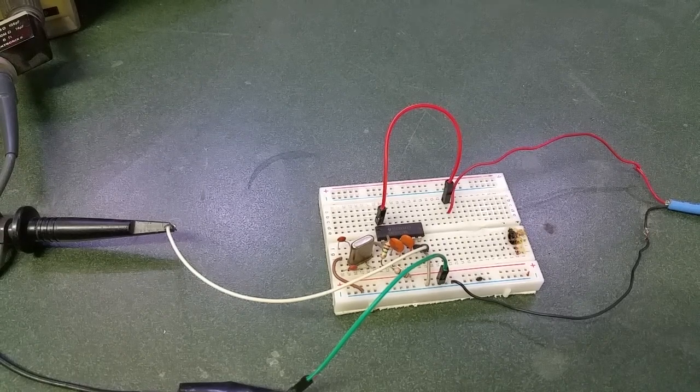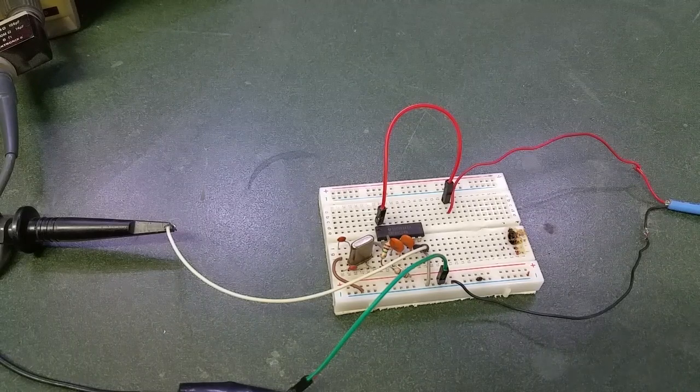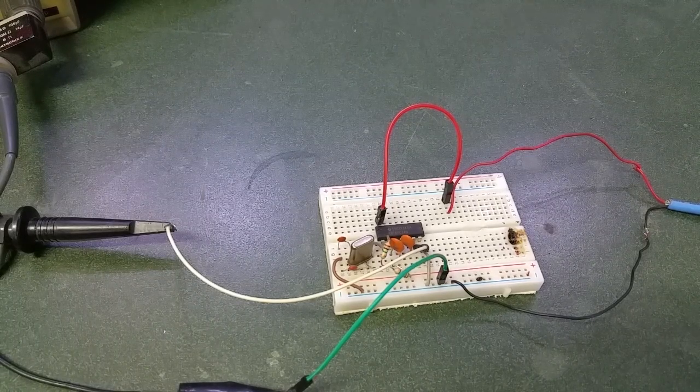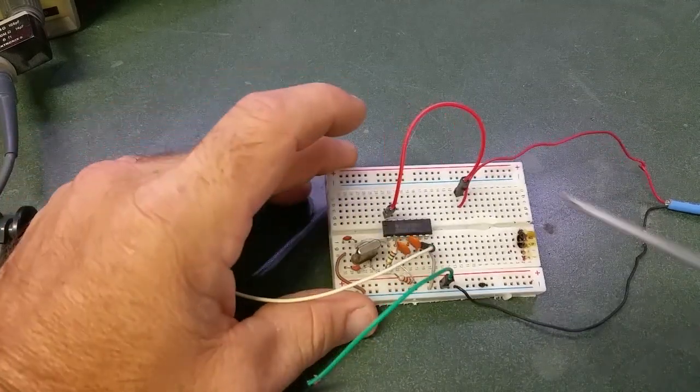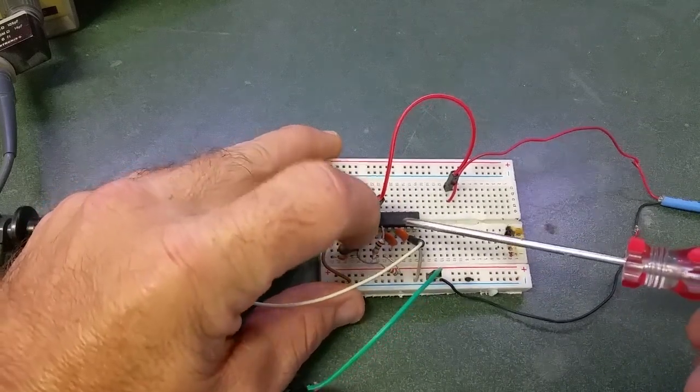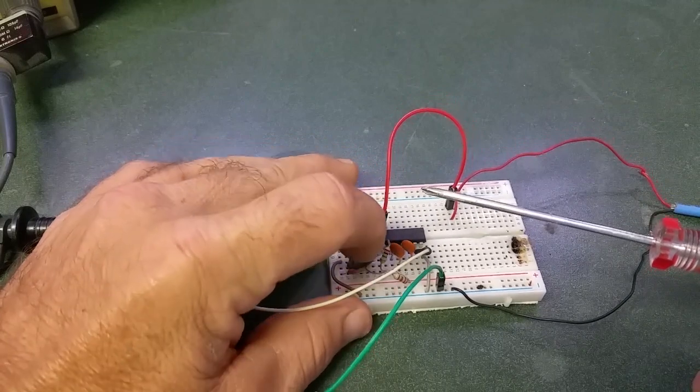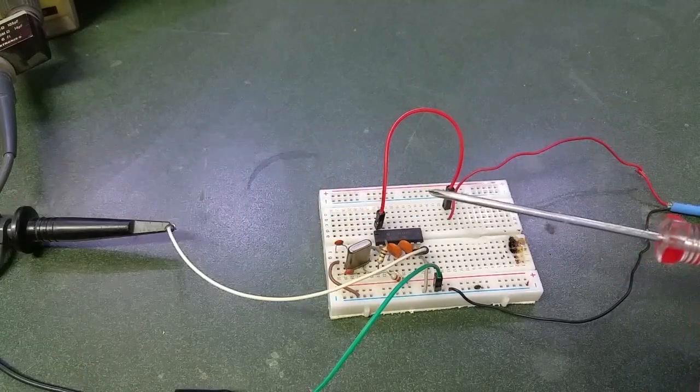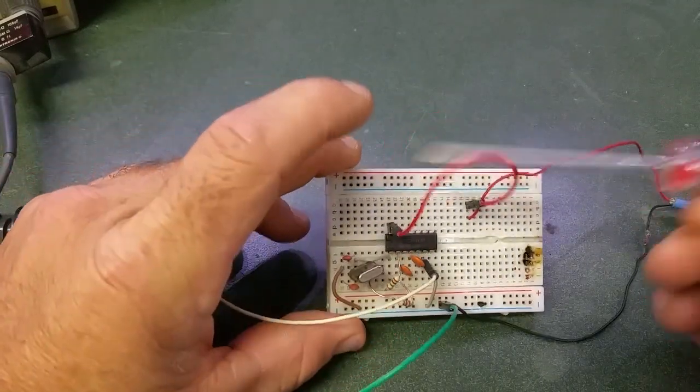For today's video I have a crystal oscillator using a hex inverting Schmitt trigger. This is a really simple circuit using four capacitors, two resistors, the oscillator, and the 74HC14 hex inverting Schmitt trigger.